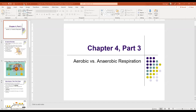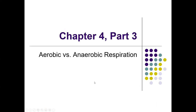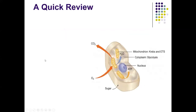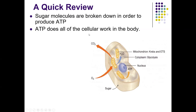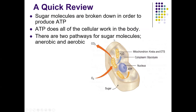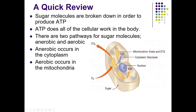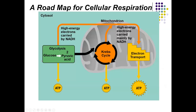That was chapter 4B. Now we go to chapter 4C — a quick review: sugar molecules are broken down to produce ATP, which does all the cellular work. There are two pathways: anaerobic, like with sprinting or holding your breath, and aerobic, like when resting. Anaerobic occurs in the cytoplasm; aerobic occurs in the mitochondria.